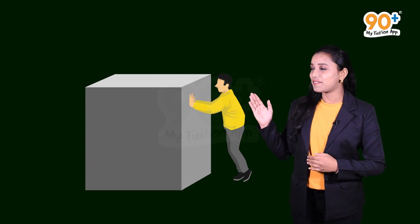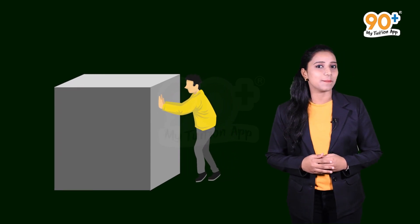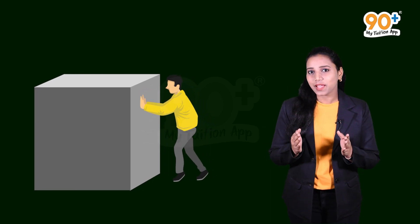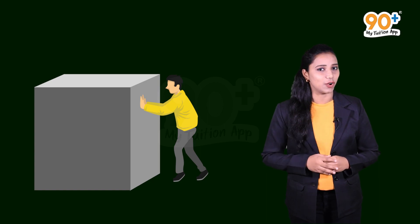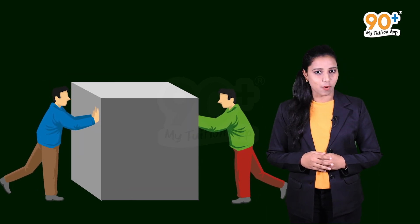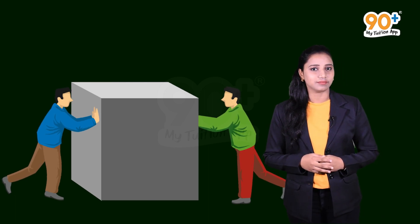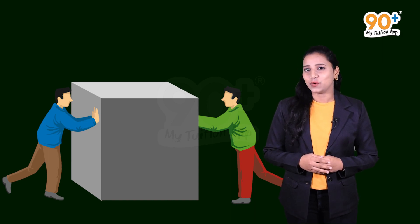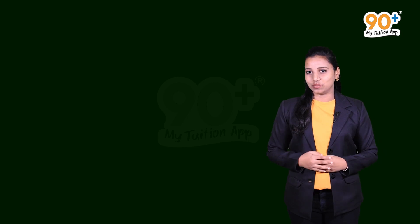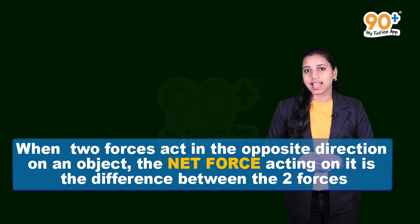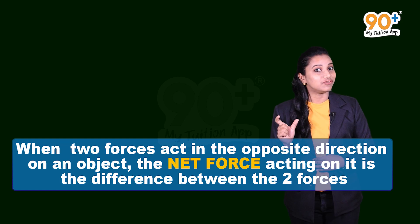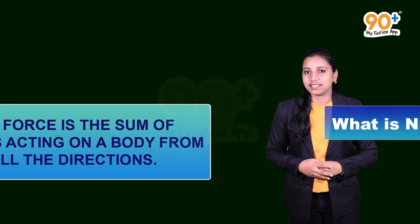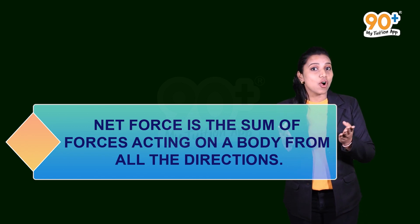Have a look here. A boy is pushing a box and it is moving — he is applying some force on that box, and it is moving in that direction only. What if two boys are pushing that box in two opposite directions with the same force? Will it move? No. When two forces act on a body in opposite directions, the net force acting on that body becomes the difference between the two forces. Net force means the sum of the forces acting on that body from all the directions.